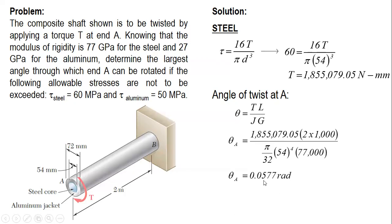The answer is 0.0577 radians times conversion factor 180/π. The angle of twist is 3.307 degrees, considering a stress of steel at 60 MPa.